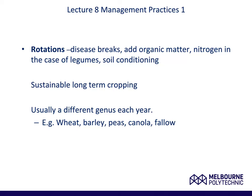Rotations are where you plant different crops in different years. They are used as disease breaks. They enable the addition of organic matter. You can put nitrogen into your soil by the use of legumes, and they can improve the carbon condition of your soil. A rotation usually involves a different genus each year for a set of years — sometimes two, sometimes three, sometimes four. Rotations are considered essential for sustainable long-term cropping. Not only does it allow you to balance your nutrients in your soil, but it also reduces the build-up of disease. In the long term, this keeps down your costs.